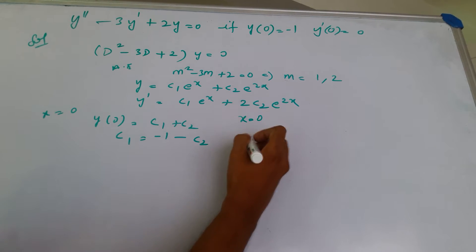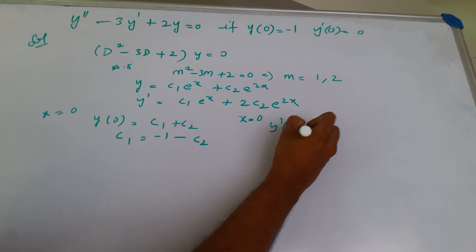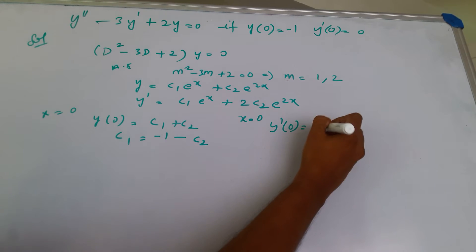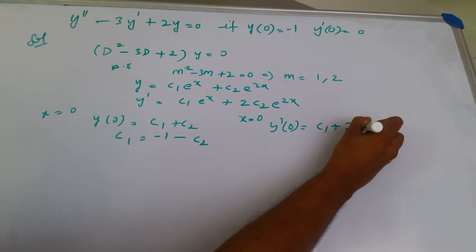When x is equal to 0 again, y dash of 0, this will be c1 plus 2 c2.